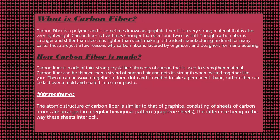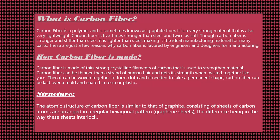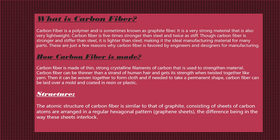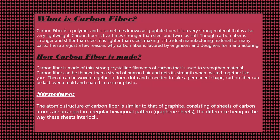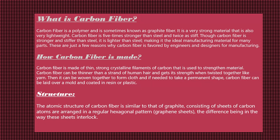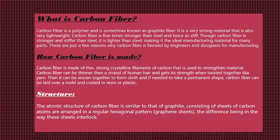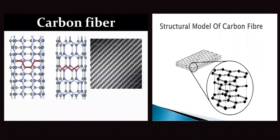Next is structure. The atomic structure of carbon fiber is similar to that of graphite, consisting of sheets of carbon atoms arranged in a regular hexagonal pattern — known as graphene sheets — the difference being in the way these sheets interlock. Here are two images of carbon fiber: first, a carbon fiber image, and next, a structure model of carbon fiber.